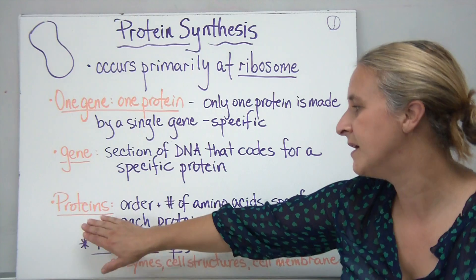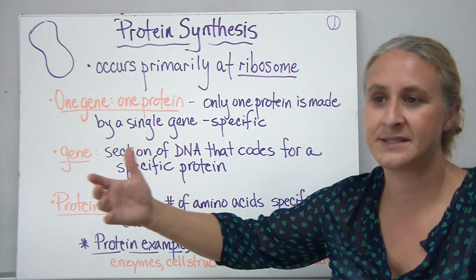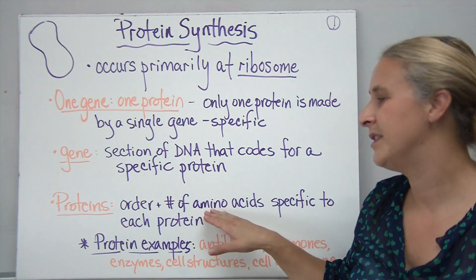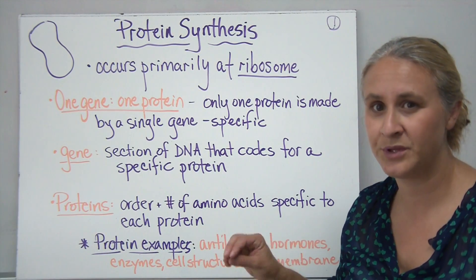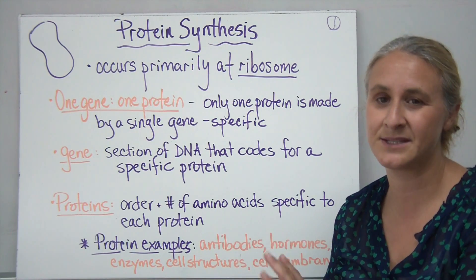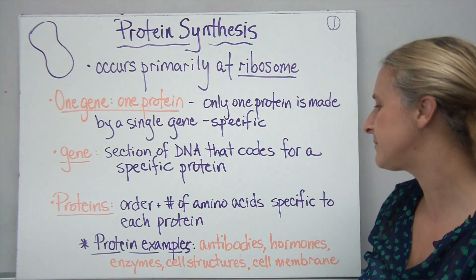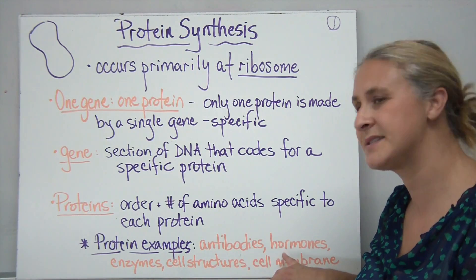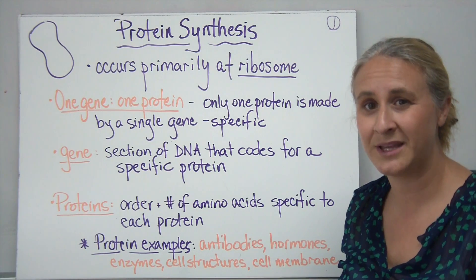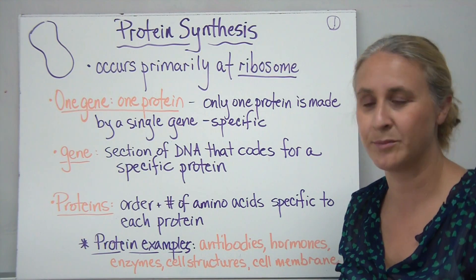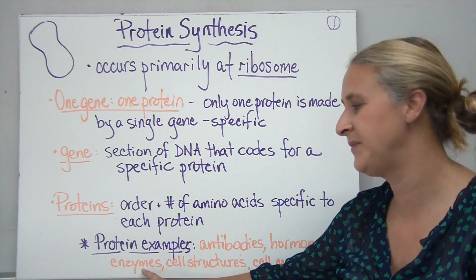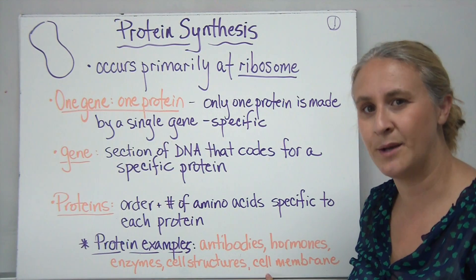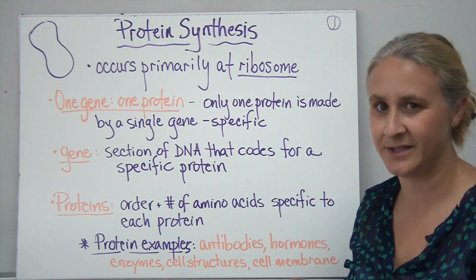We call it a polypeptide sometimes. In order to make a specific protein — like keratin, which deals with some of your hair and nail structures — the order in which you put the amino acids together makes a difference; it's specific for every protein. Examples of proteins in the body include antibodies, which help fight off disease; hormones, which help regulate body processes like blood sugar levels and metabolism; enzymes, which control most of our chemical reactions; cell structures; and proteins embedded in the cell membrane.